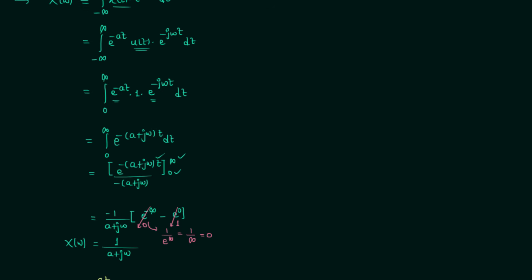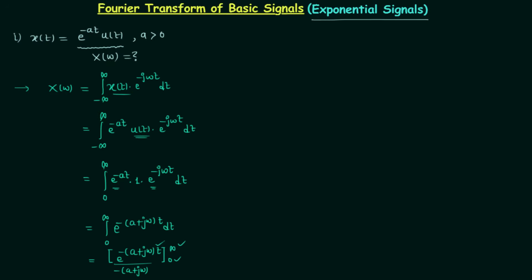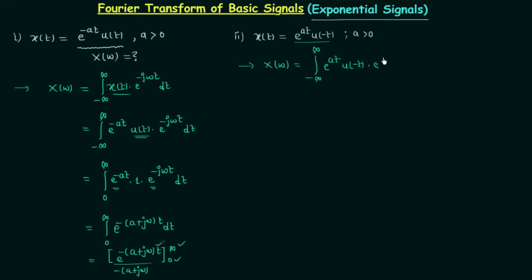Now we will move to our second exponential signal. The second exponential signal is equal to e power at multiplied by u(minus t), when a is positive. We will follow the same steps and calculate the Fourier transform using the same formula: integration minus infinity to infinity of x(t) times e power minus j omega t, dt, where x(t) equals e power at, u(minus t). We know u(minus t) is obtained after performing the time reversal of u(t).